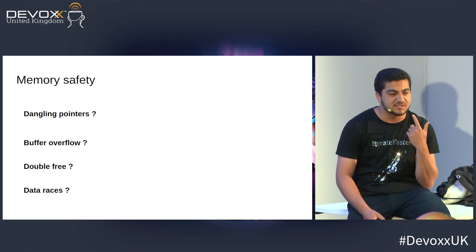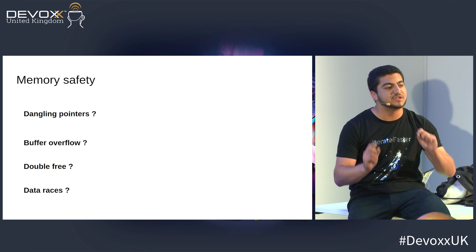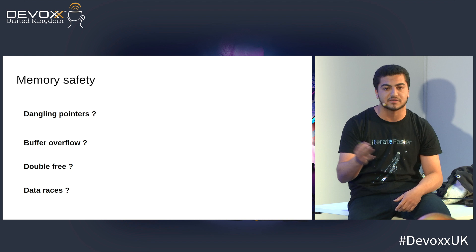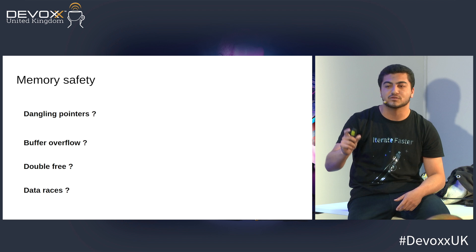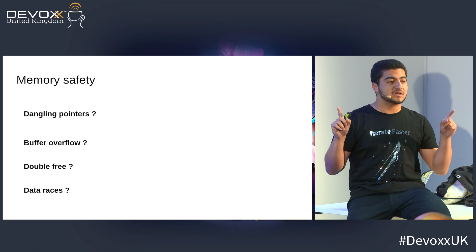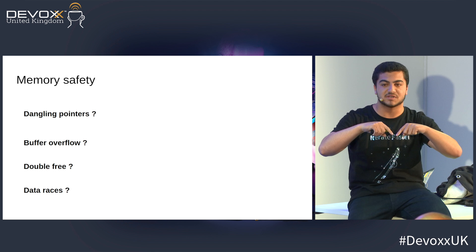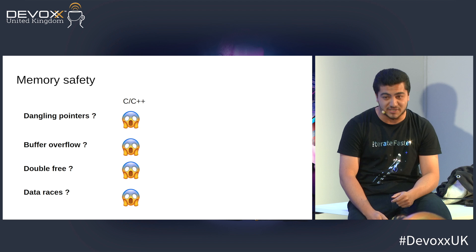For memory safety, you need to remove at least four types of errors: the first is dangling pointer, the other is buffer overflow, then double free, and data race. For people who don't know what 'free' means — it's when you deallocate memory. In C, you have malloc or calloc, and to release this memory you call the method 'free'. If you call free again on already freed memory, that can be a security risk. A data race is when two processes try to write to the same memory zone at the same time — we don't know what will happen. It's terrible.